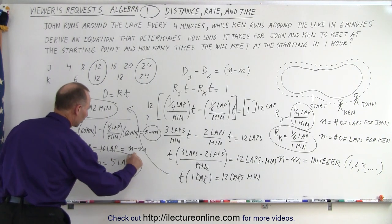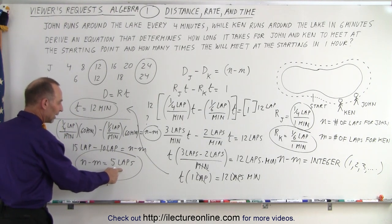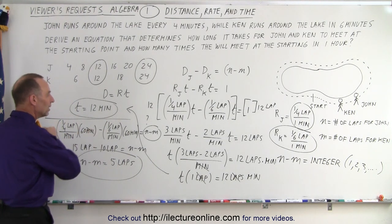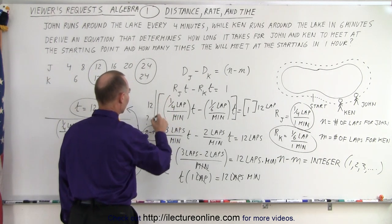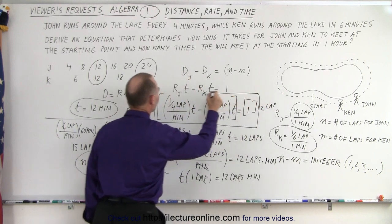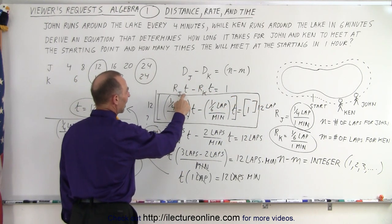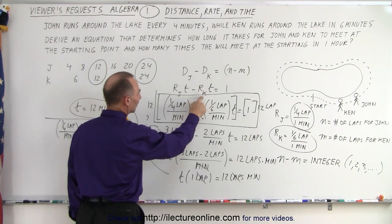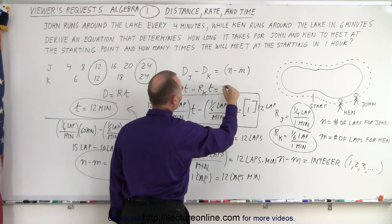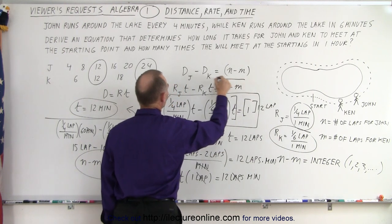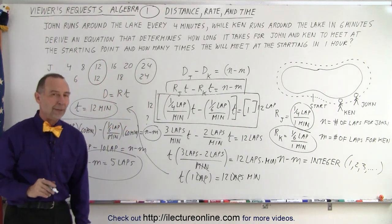Using our equation, we can now also calculate the number of times that John will lap Ken in a one hour period. This equation right here is the equation we can use to solve any part of that problem. It's simply rate of John times time minus rate of Ken times time equals the number of laps. In this case, to do a more general equation, we write as N minus M, and that would be the general equation to solve a problem like that.